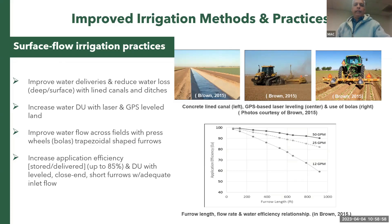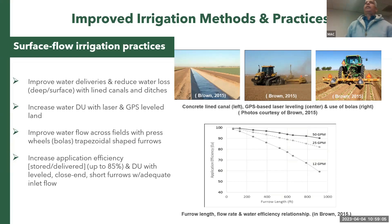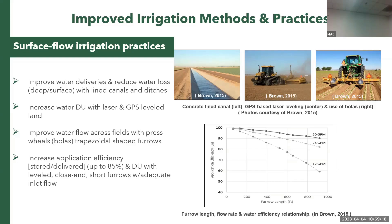We can increase application efficiency and distribution uniformity using closed-end furrows and shorter furrows. Looking at the graph, with longer furrows — say 900 feet — you need a higher flow rate to achieve higher application efficiency. With only 12 gallons per minute per furrow, you might get as low as 60% application efficiency.